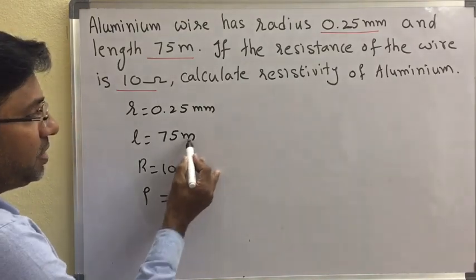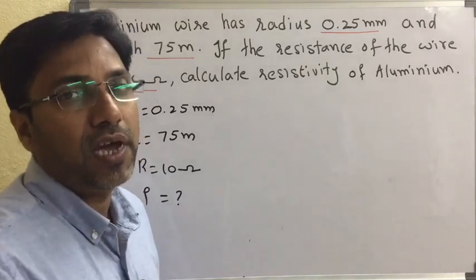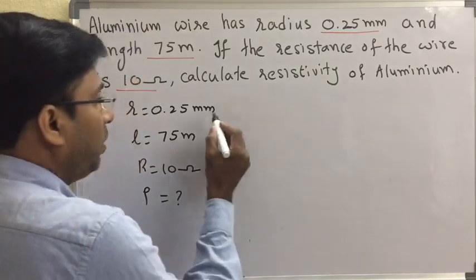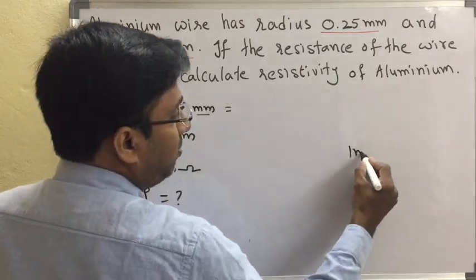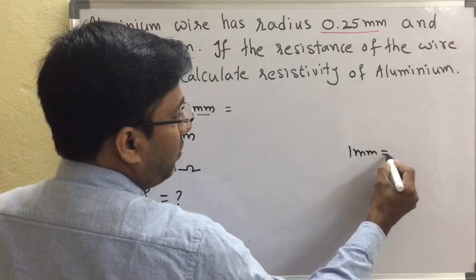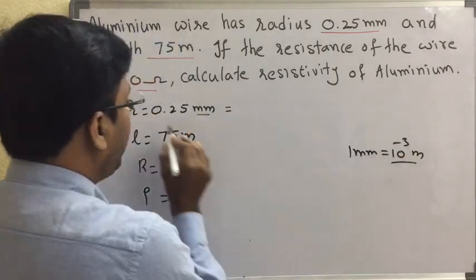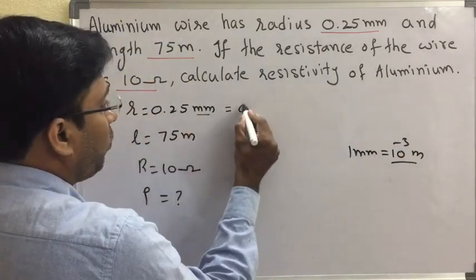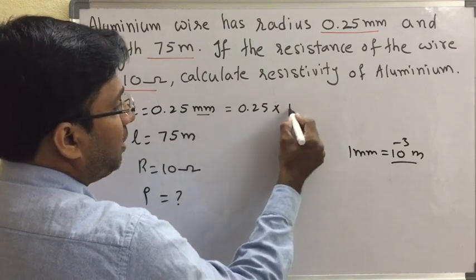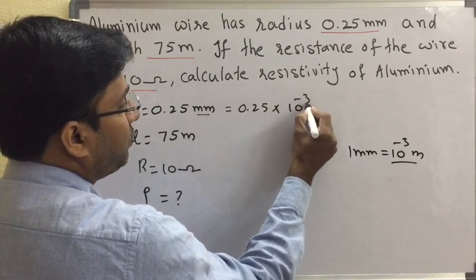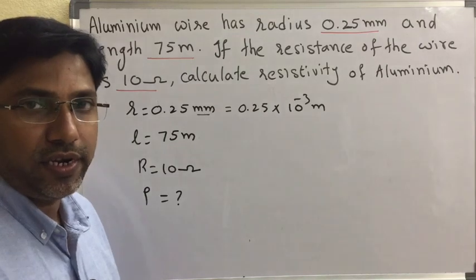Here length is in meters and radius is in millimeters, so we will convert. 1 millimeter is equal to 10 power of minus 3 meters. So we replace millimeter with 10 power of minus 3 meters, making r equal to 0.25 into 10 power of minus 3 meters. Let us calculate this.